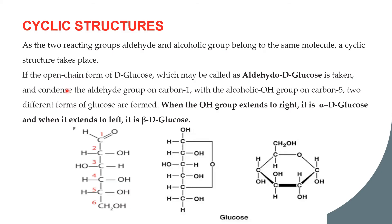Cyclization occurs by condensation — removal of water — between the aldehyde of carbon 1 and the OH of carbon 5. This forms a ring structure. When this happens, two different groups of glucose are formed: when the new OH on carbon 1 extends to the right, it is called alpha-D-glucose; when it extends to the left, it is called beta-D-glucose.